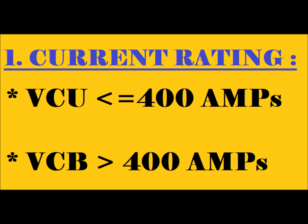The first difference is current rating. VCU is categorized as less than 400A. For VCB, the rating is 400A and above — for example, 800A, 1250A, 2000A, 3200A, etc.